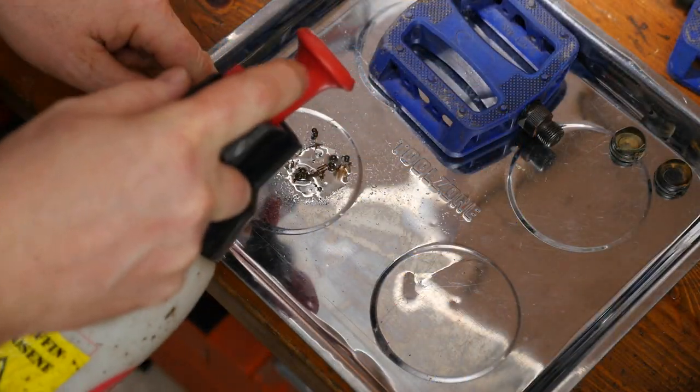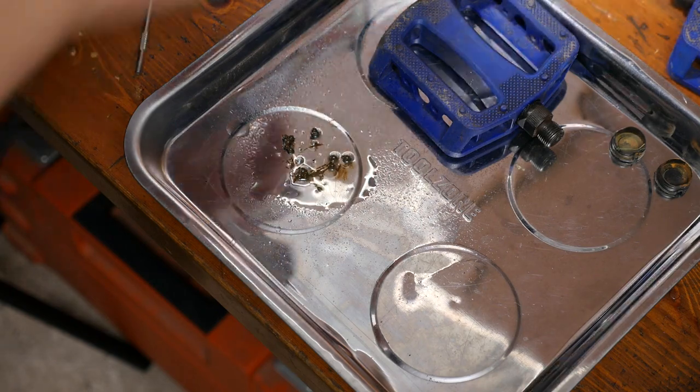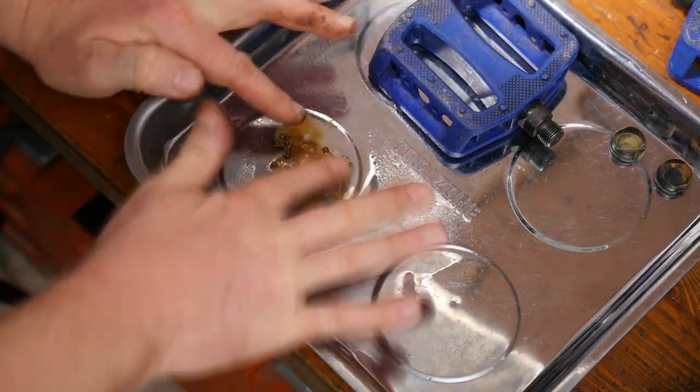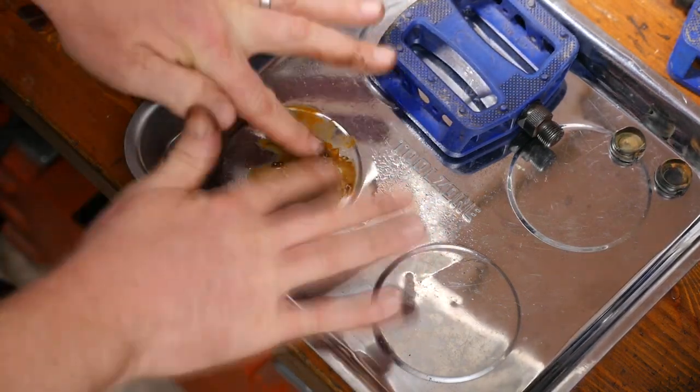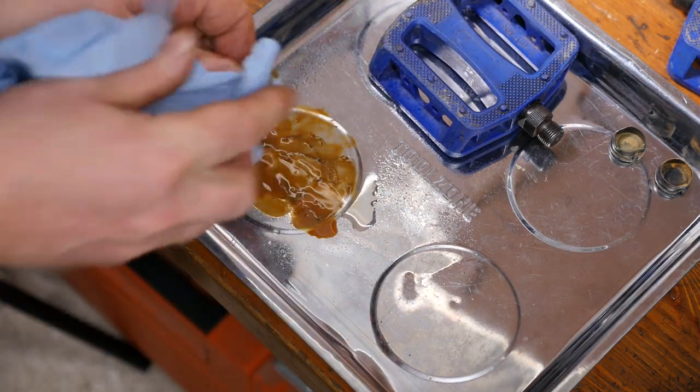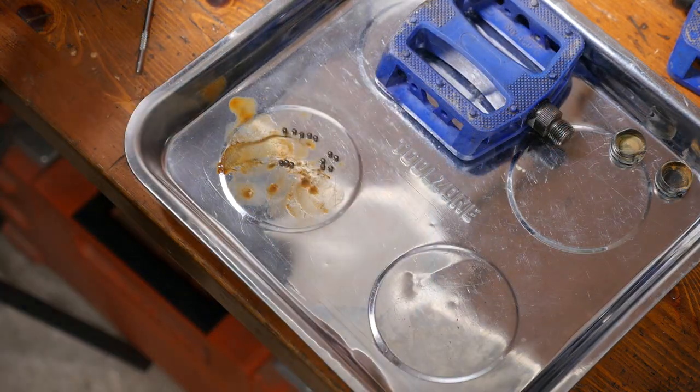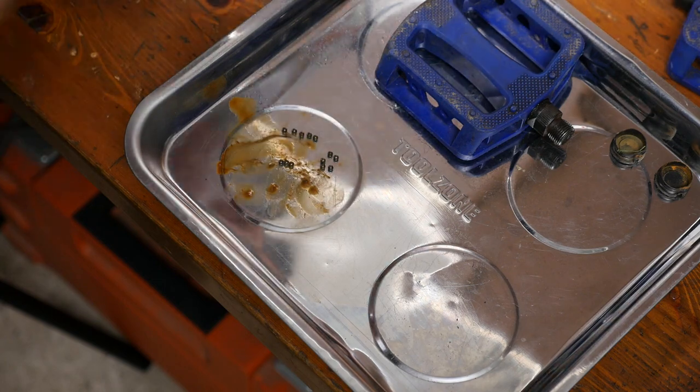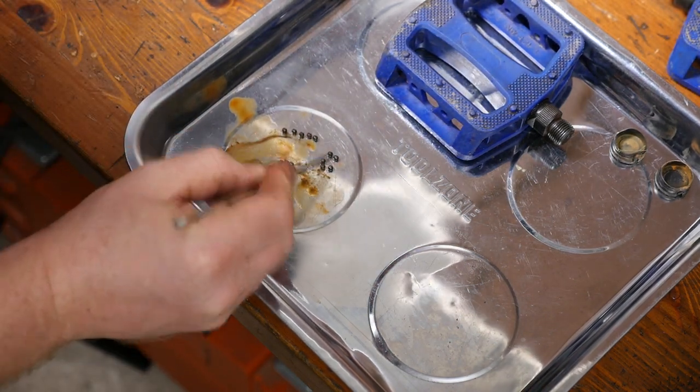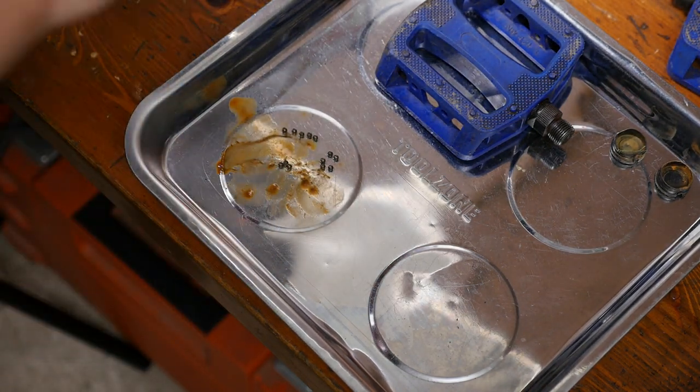Once you think you've got all the bearings out it's worth just checking with a little torch to make sure there's not one bearing still sat in there that could get lost once you've removed the axle. Now I'm just going to use a little bit of paraffin to give the bearings a quick clean-up, and just to get some grit off and the remaining grease. I'll then count them just to make sure how many bearings I've actually got there. And in this example I've got 13 bearings.